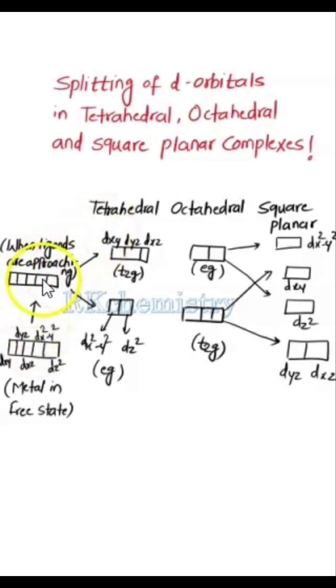In tetrahedral complexes, these d orbitals get split into two energy levels. First one is eg, it contains two orbitals: dx²-y² and dz². Second is t2g.